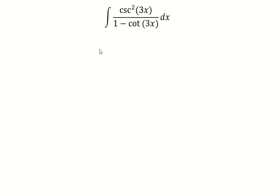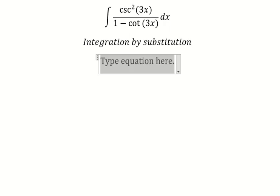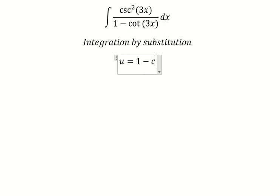Hello everybody, today I want to show you how to solve this one. We can use integration by substitution. So I will put u equals 1 minus cot(3x). That's what we need to do first.